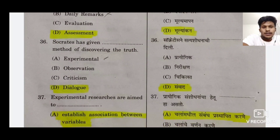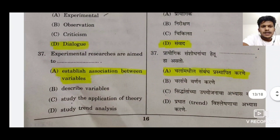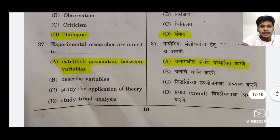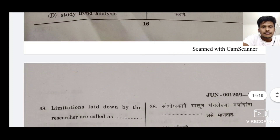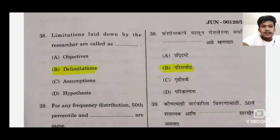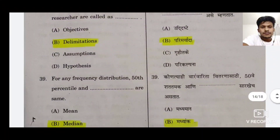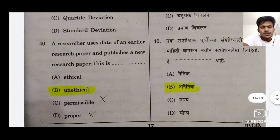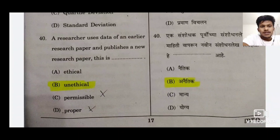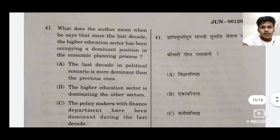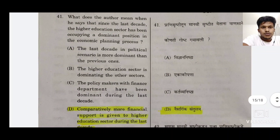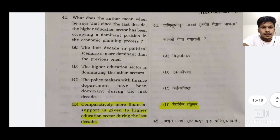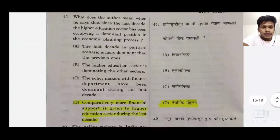36 jo hai woh D hai — dialogue method diya tha Socrates ne. 37 ka jo hai woh A hai — experimental research ka. 38 ka jo hai woh B hai — D limitations. 39 ka jo hai woh median, B aayega. 40 ka jo hai woh unethical — matlab doosre research paper se data use karke publish kiya hai, toh unethical ho jaayega yeh — B. 41 ka jo hai woh D hai. Marathi aur English dono dikh raha hai — D hai.